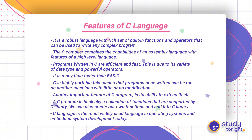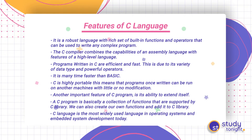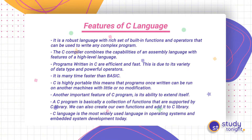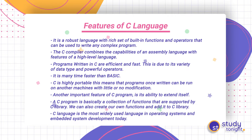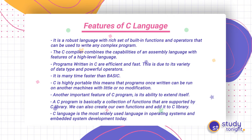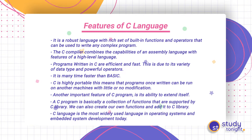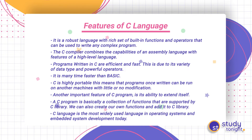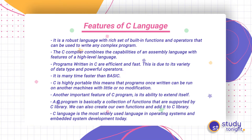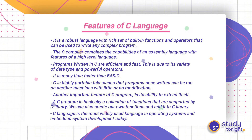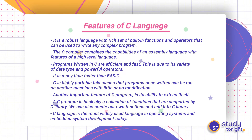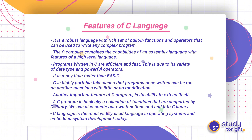The C compiler combines the capabilities of an assembly language with features of a high level language. C is already a high level language and its compiler has the capabilities of an assembly language, making it a very fast language. Programs written in C are efficient and fast, due to its variety of data types and powerful operators.